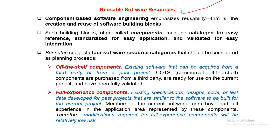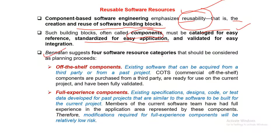For reusable software resources, component-based software engineering emphasizes reusability. There are four software resource categories to consider. First, off-the-shelf components — existing software that can be acquired from a third party or from past projects. For example, if you want to develop a Java-based project, you need Eclipse or NetBeans. You are not going to develop Eclipse or NetBeans yourself — you are going to use those off-the-shelf components.